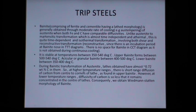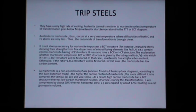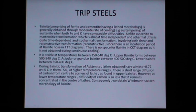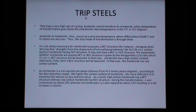At high temperature ranges there is short-range diffusion (SRD) of carbon from the center to corners of the lath, as found in upper bainite. At lower temperature ranges, diffusivity of carbon is so low that it remains concentrated in the center of the laths. Consequently, upper bainite has carbides present between the laths and not concentrated within them, whereas lower bainite has carbon content concentrated within the laths and not between them.